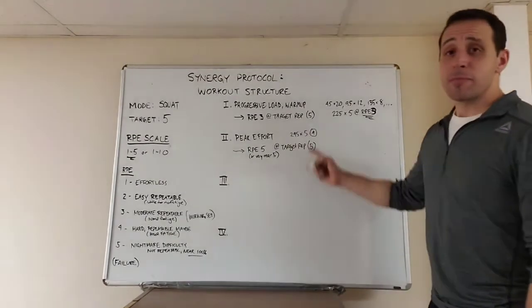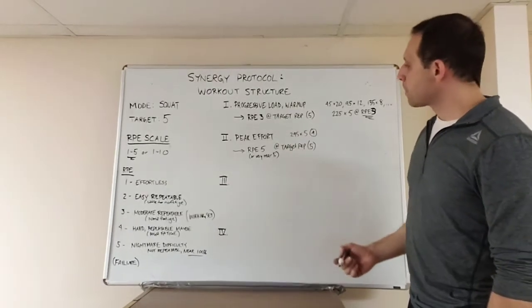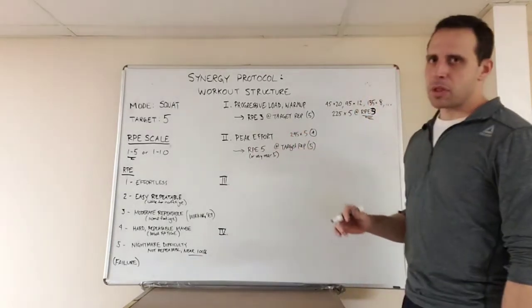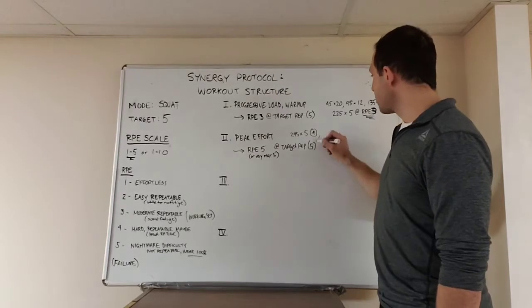Now it might be a 3 again, in which case you'd add more weight. Well, in this case, he got a 4. He knows he can do more than that, or do a couple sets here. So he's going to increase the weight. This is peak effort, after all. He's going to increase the weight in the peak effort phase.